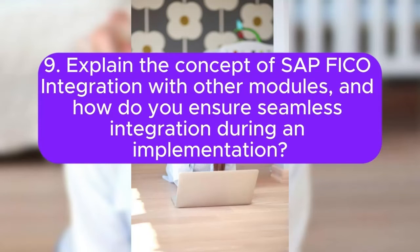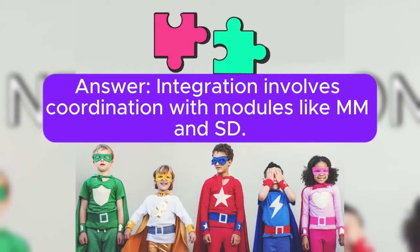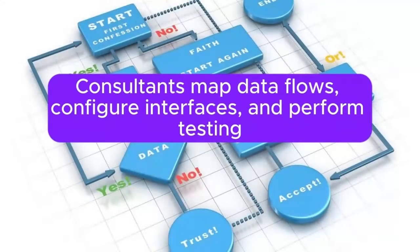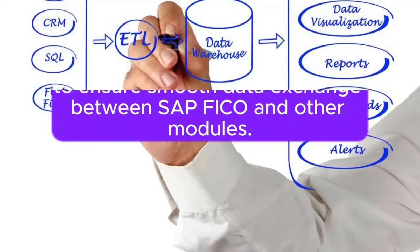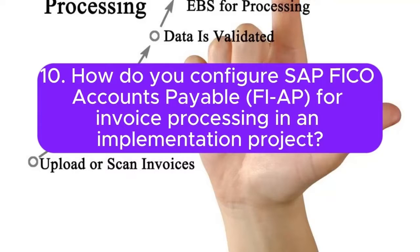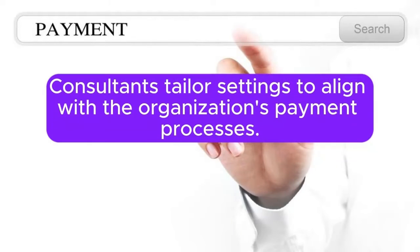Question 9: Explain the concept of SAP FICO integration with other modules, and how do you ensure seamless integration during an implementation? Integration involves coordination with modules like MM and SD. Consultants map data flows, configure interfaces, and perform testing to ensure smooth data exchange between SAP FICO and other modules. Question 10: How do you configure SAP FICO Accounts Payable (FI-AP) for invoice processing in an implementation project? FI-AP configuration includes defining vendor master data, tolerance groups, payment terms, and automatic payment programs. Consultants tailor settings to align with the organization's payment processes.